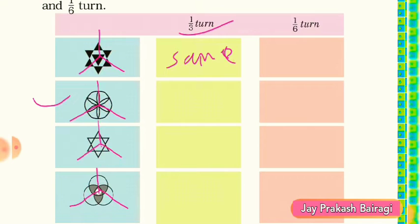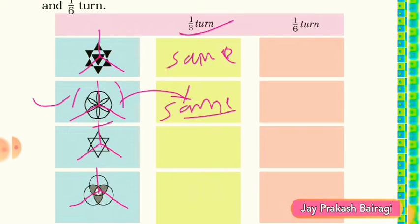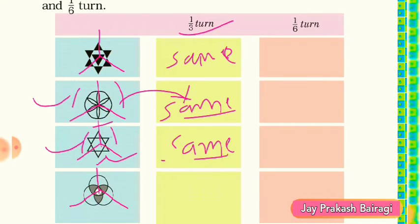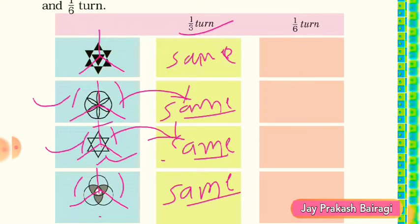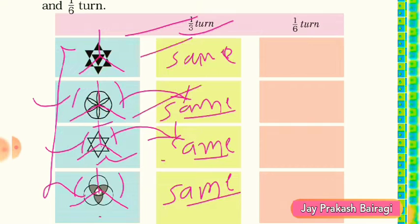Now come to the second picture — we have a circular shape with flower patterns. In every one third turn it is looking the same, so you can draw this picture here. In the third picture we have triangles, and if you properly observe, in each one third turn it will also look the same. At the last picture we have three circles, and in each one third turn it will also look the same.